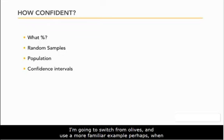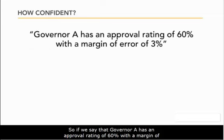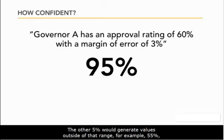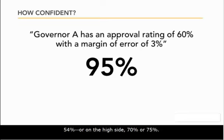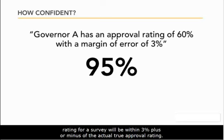Let's use a more familiar example with political polling. If we say that Governor A has an approval rating of 60% with a margin of error of 3%, how confident are we of that? Most of the time, the confidence level used in statistics is 95%. In other words, 95% of the samples taken from the entire population should produce an approval rating of between 57% and 63%. The other 5% would generate values outside of that range — for example, 55%, 54%, or on the high side, 70% or 75%. But we know from inferential statistics that 95% of the time, the approval rating will be within 3% plus or minus of the actual true approval rating.